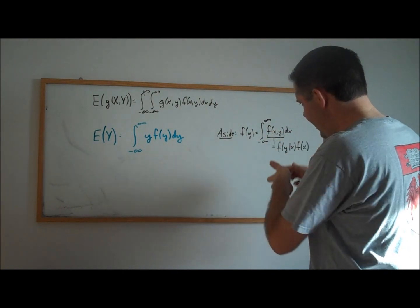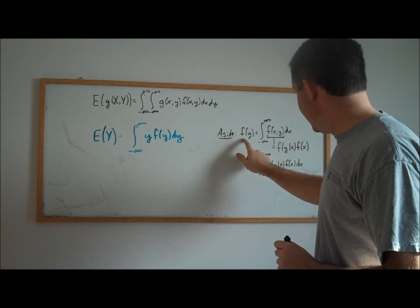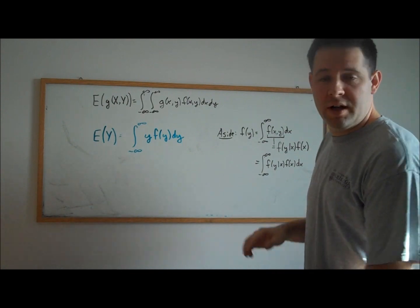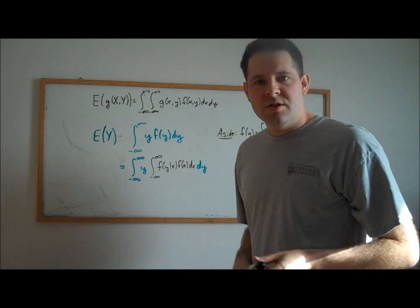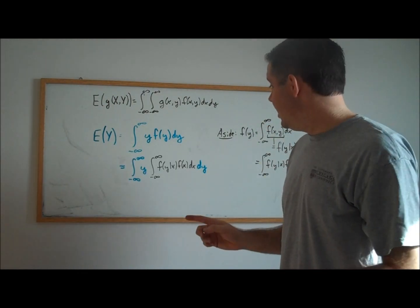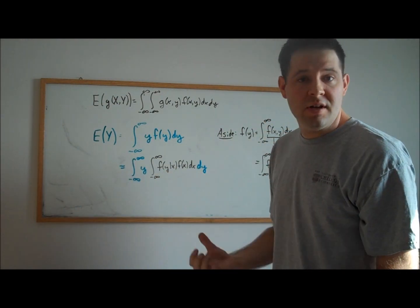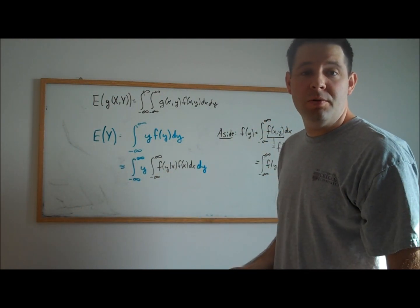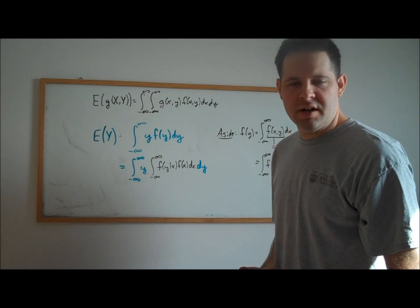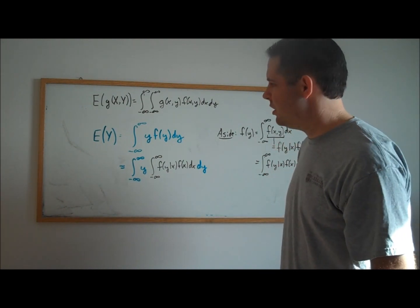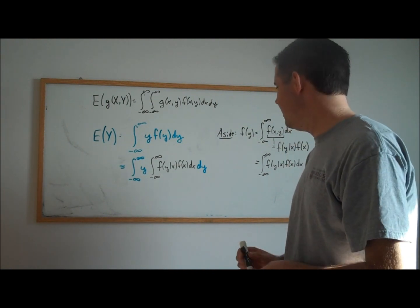We can go ahead and plug that in. Using the aside that f(y) equals this integral, we plug in for that integral. This black part of this expression is just the marginal PDF of y, expressed in a more complicated fashion. Don't worry — this is going to give us a really useful formula.